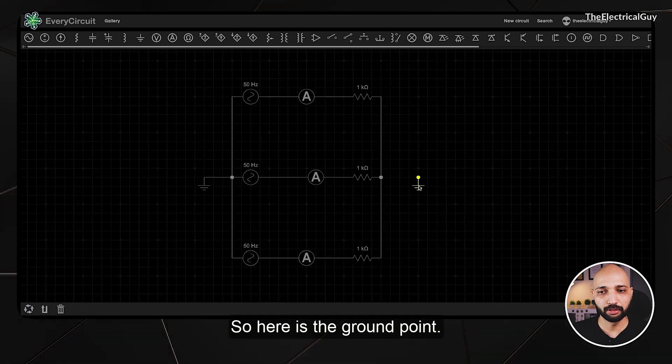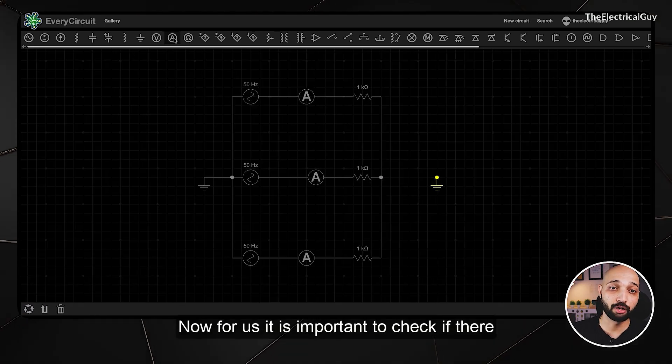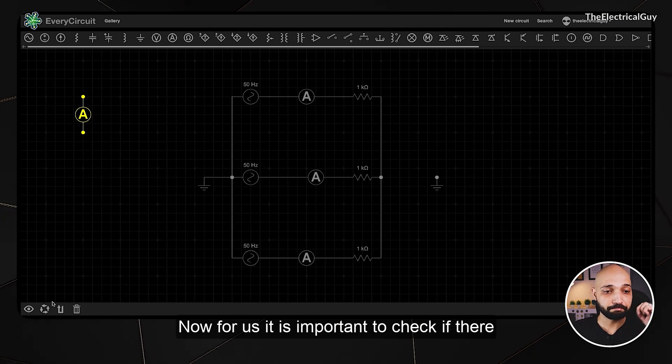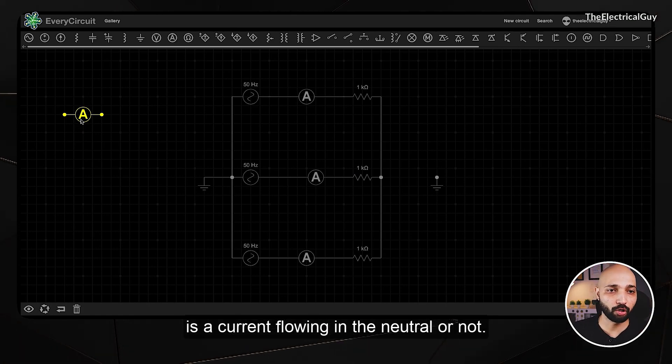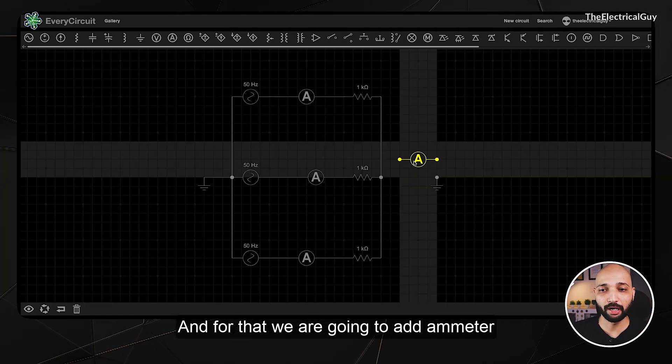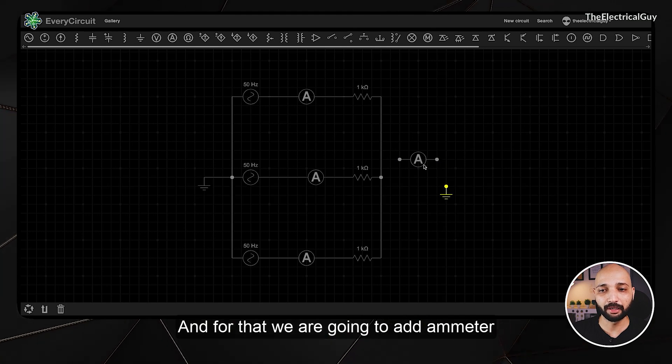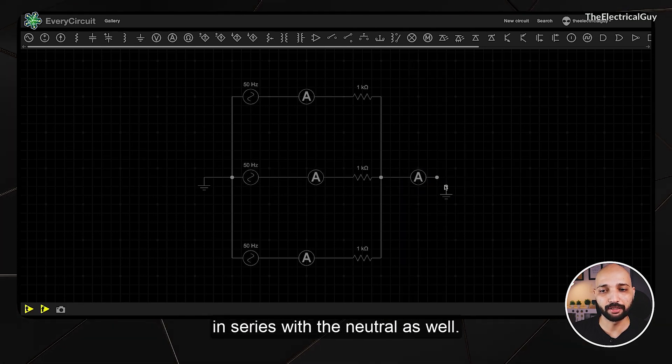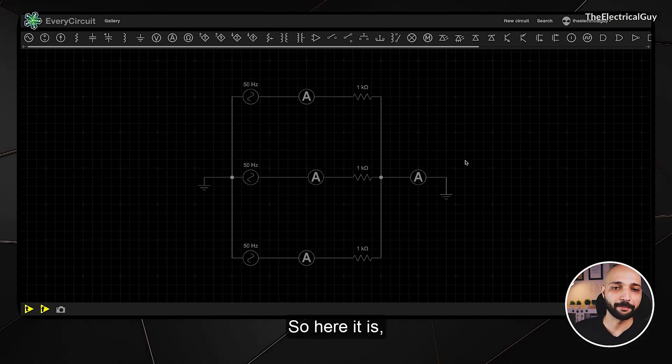At the load also we will connect in the star manner. Now for us it is important to check if there is a current flowing in the neutral or not, and for that we are going to add ammeter in series with the neutral as well.